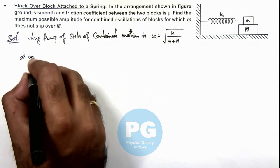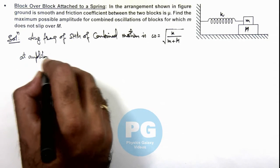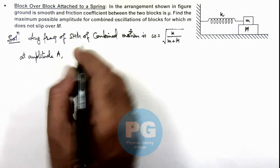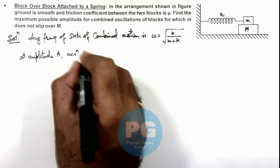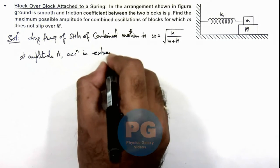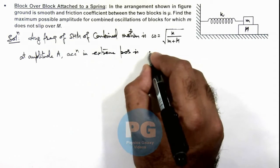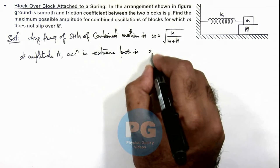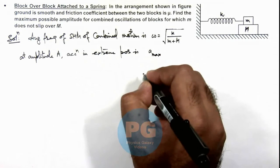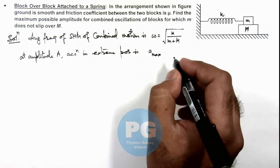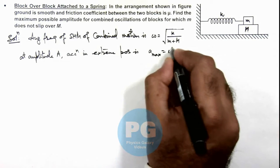At amplitude A, acceleration in extreme position is maximum. The maximum acceleration of oscillating system in SHM is given as omega squared A.